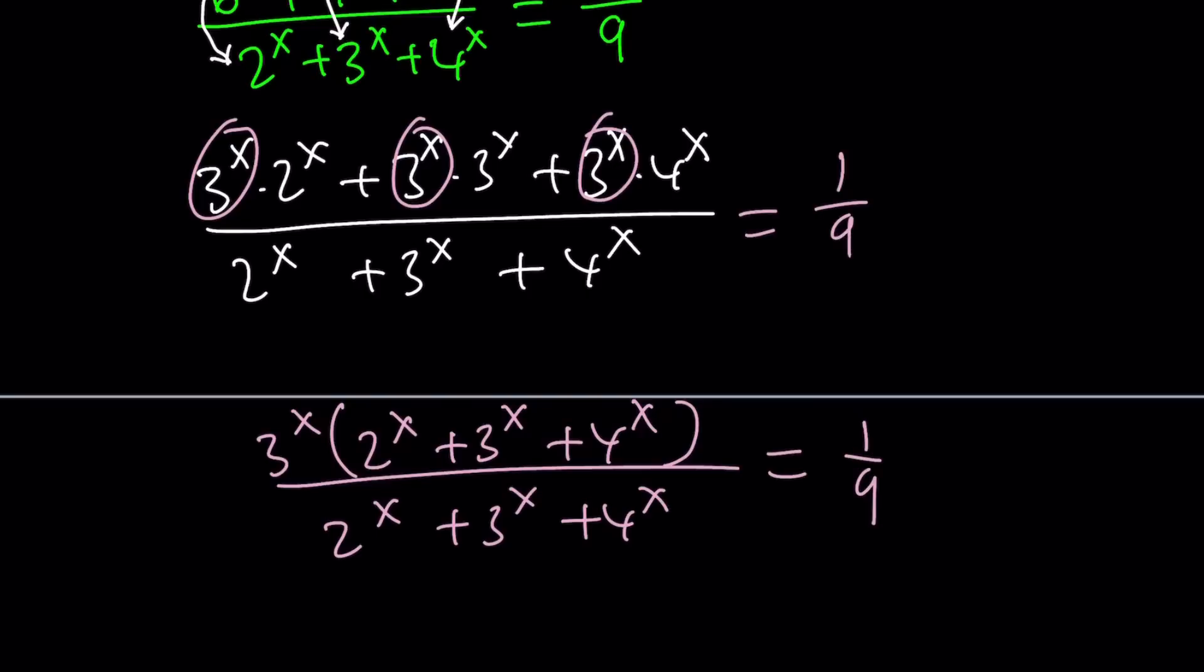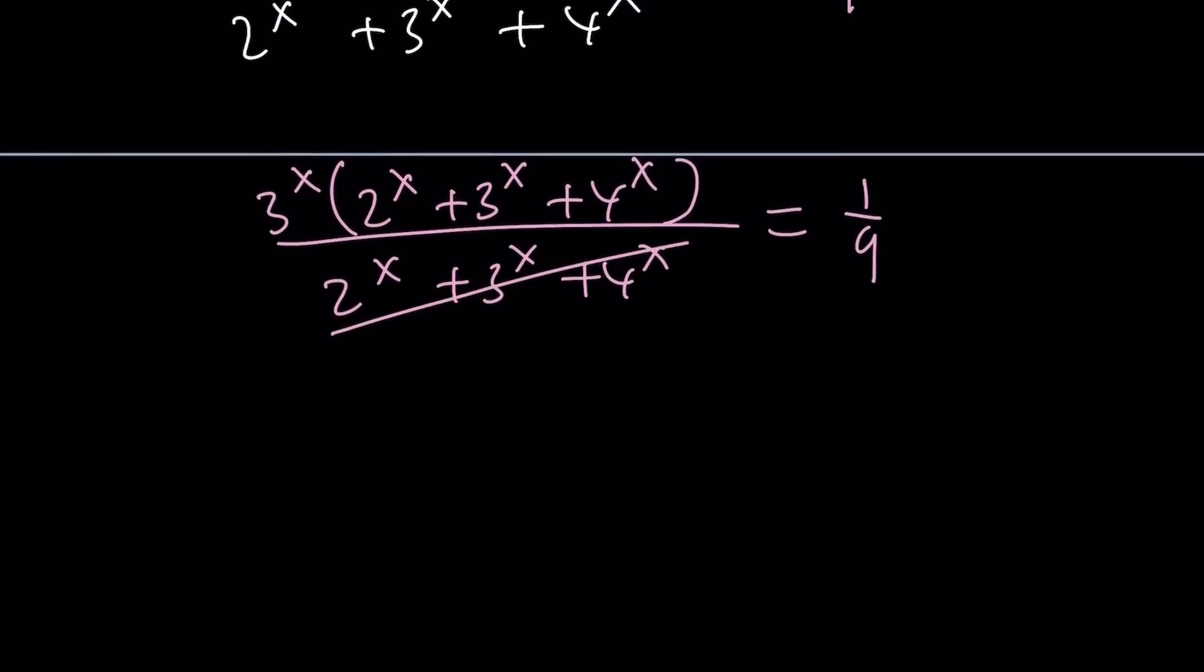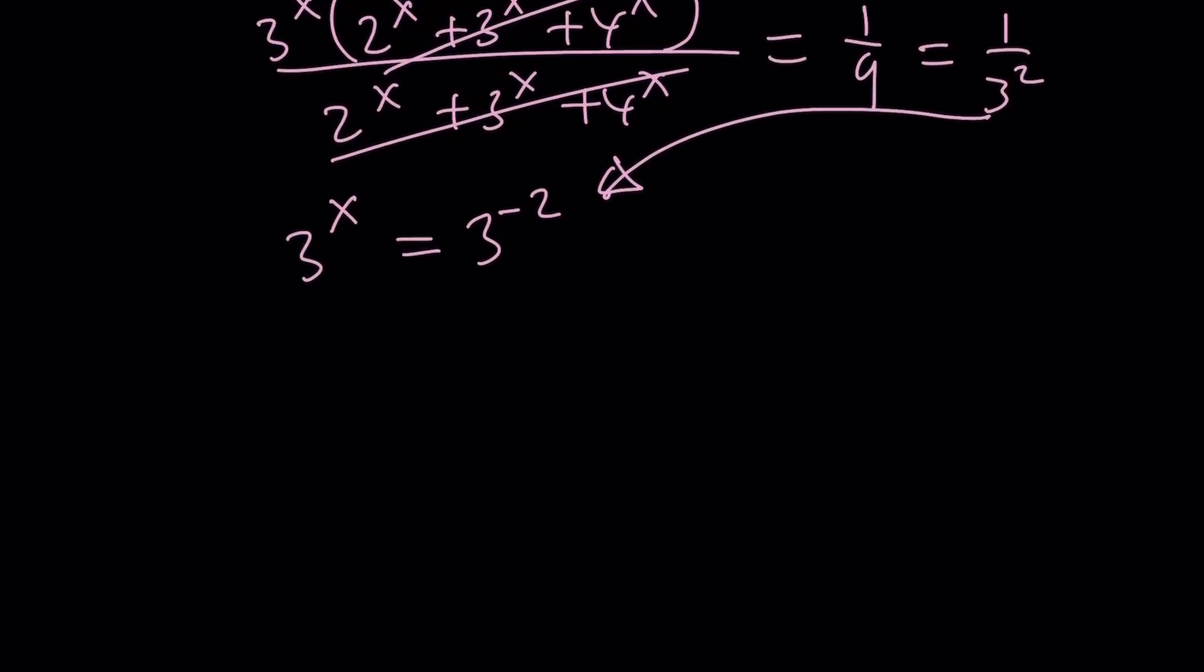Now, this gigantic thing cancels out, which is obviously not 0, and then we arrive at the same result. 3 to the x equals 3 to the power negative 2, because 1 9th is 1 over 3 squared, and that is 3 to the power negative 2, as you know from negative exponents rule. And from here, x becomes negative 2, and that happens to be the only solution. Well, this should normally bring us to the end of this video, but I just want to show you quickly what the graph looks like.